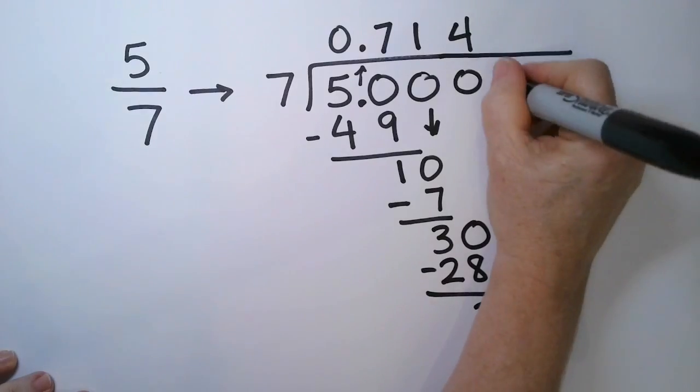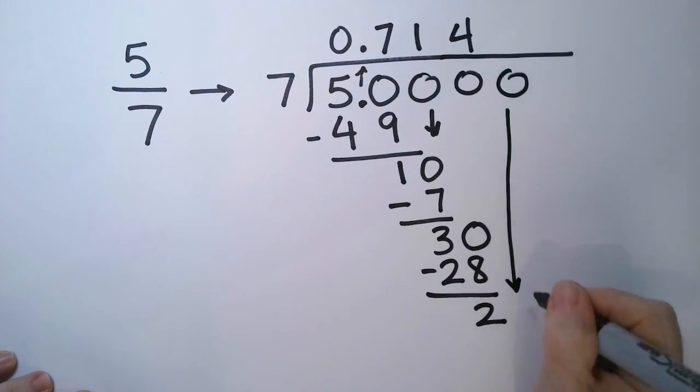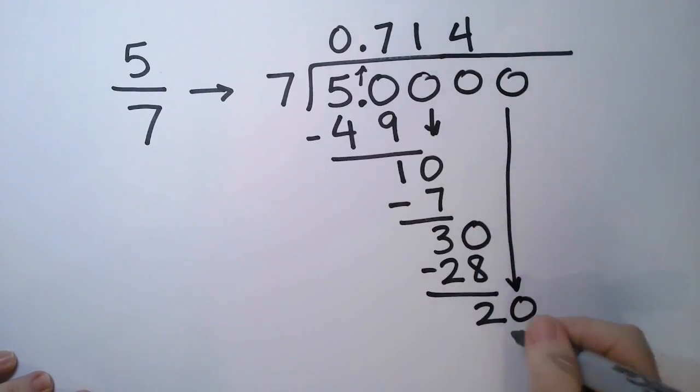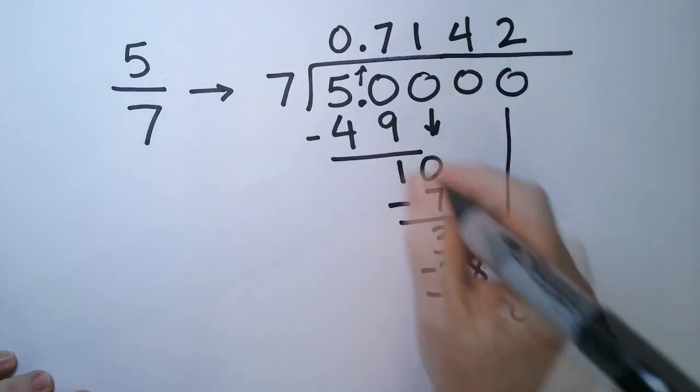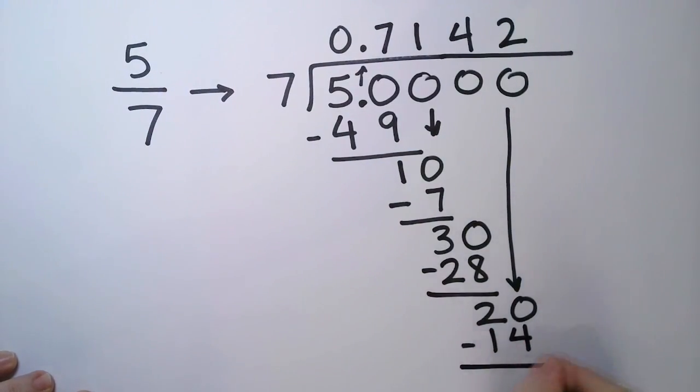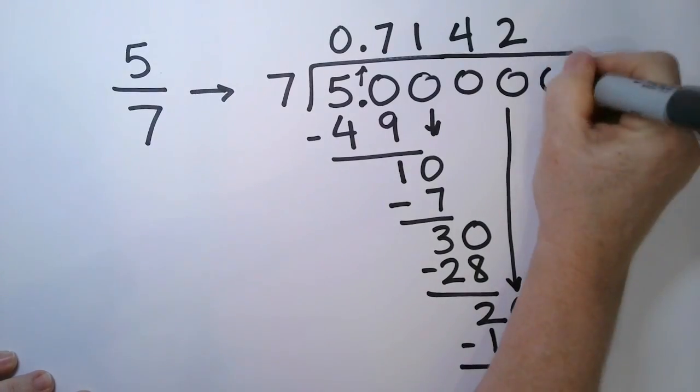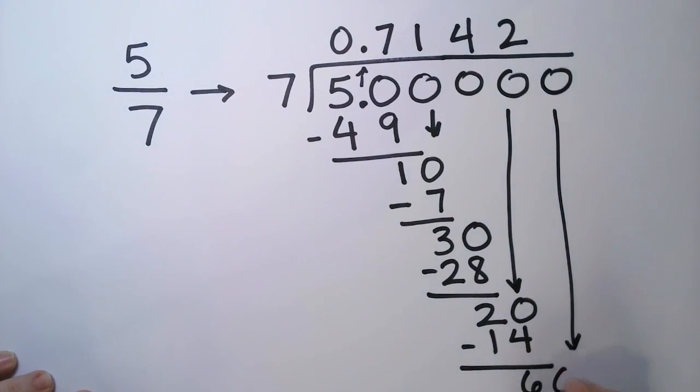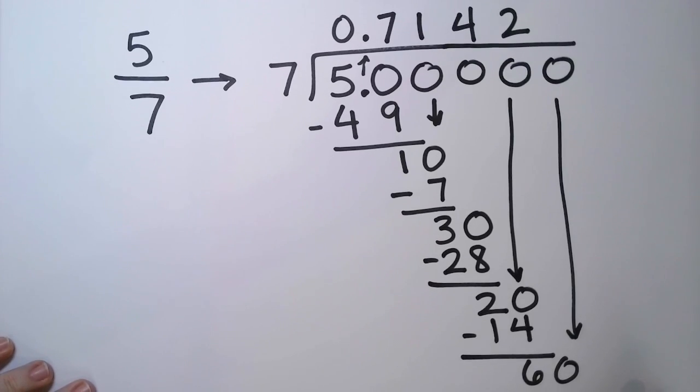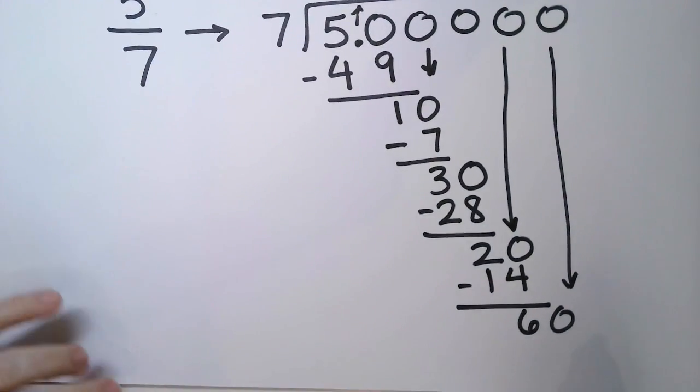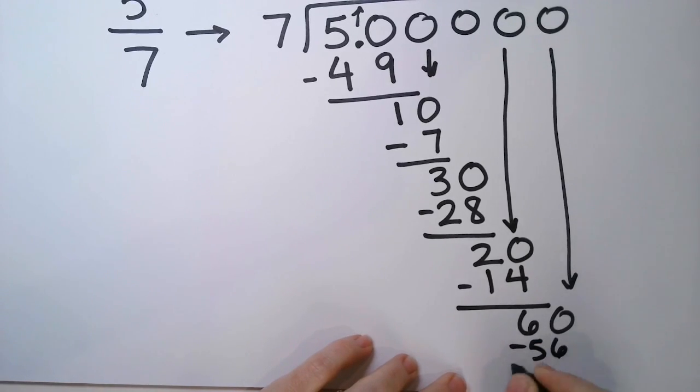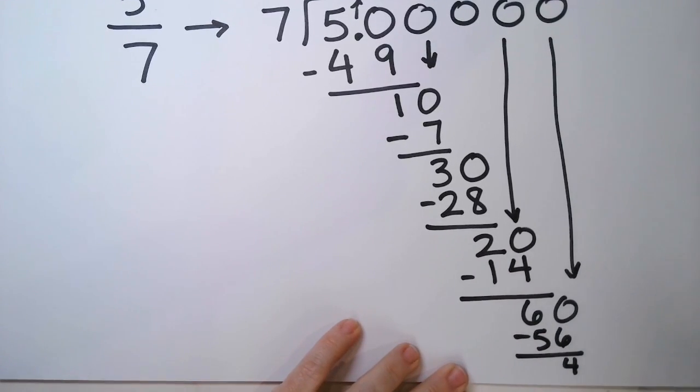Take another 0. 7 goes into 20 two times. 2 times 7 is 14. And I am left with a 6, and here's another 0. Let's drop it down. 7 goes into 60 eight times. And I have a 56. And a difference is 4.